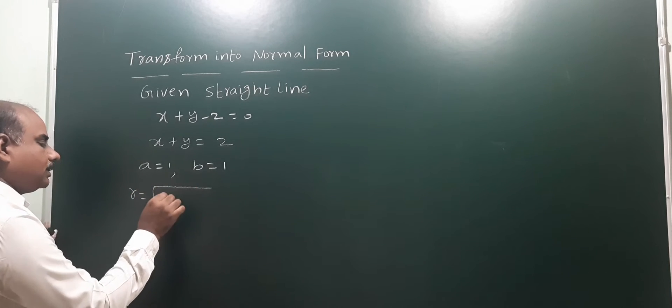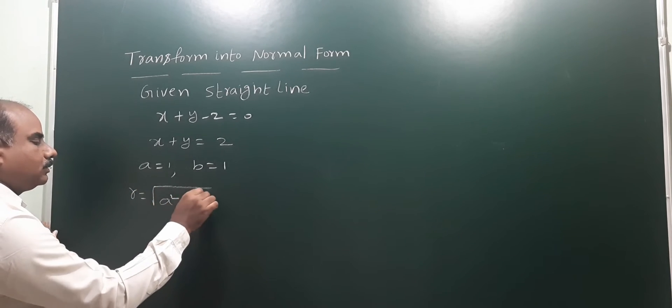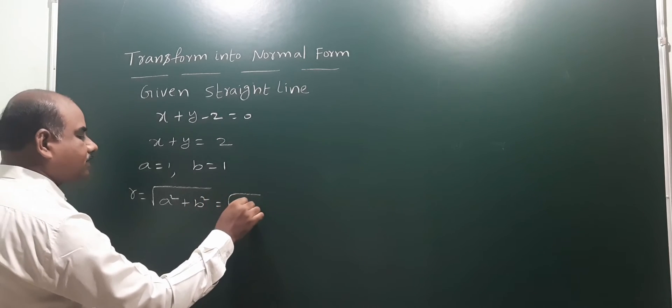The r value is found using the formula: root of a squared plus b squared. That's 1 squared plus 1 squared, which equals root 2.